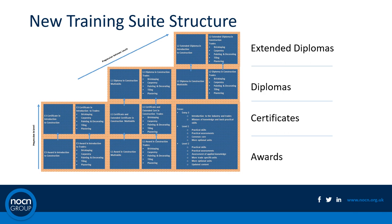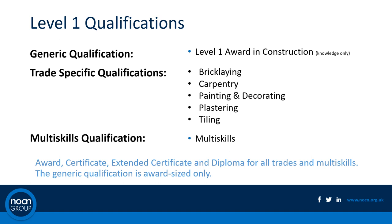This diagram shows Entry 3, Level 1, and Level 2's new qualification structure — going from left to right Entry 3, Level 1 to Level 2, and bottom to top: Awards, Certificates, Diplomas and Extended Diplomas. At Level 1 we'll be offering a generic Award called the Level 1 Award in Construction. We're also going to offer trade-specific qualifications in 5 core trades: bricklaying, carpentry, painting and decorating, plastering, and tiling. There will also be an option for multi-skills.